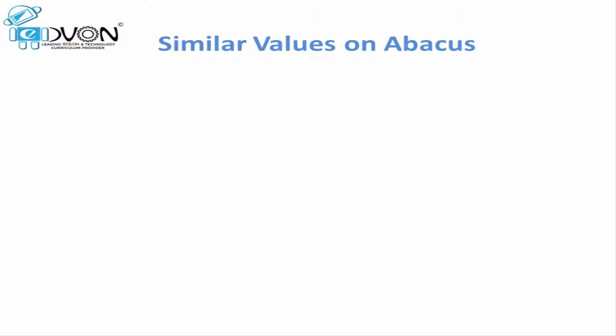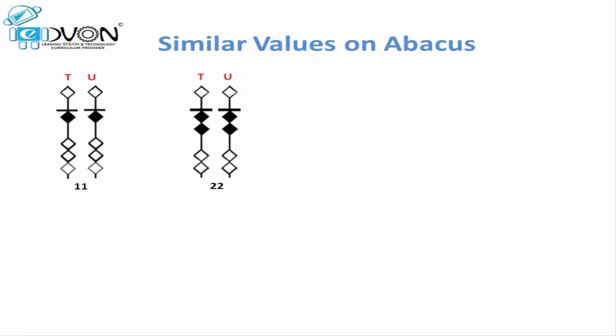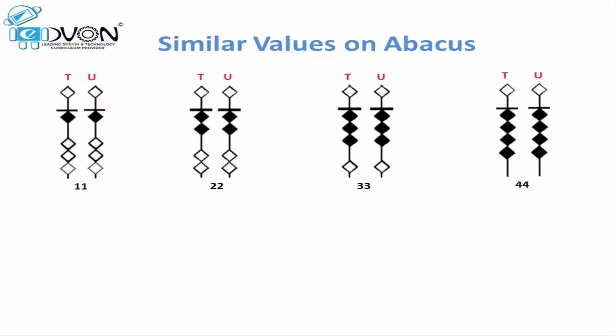Similar values are quite easy to work with. Let's practice one more time. For 11, one lower beat touching the calculation bar on both the rods. For 22, two lower beats touching the calculation bar on both the rods. To place 33, we will move three lower beats up to touch the calculation bar on tens rod and units rod as well. For 44, all four lower beats are moved up to touch the calculation bar on both the rods.